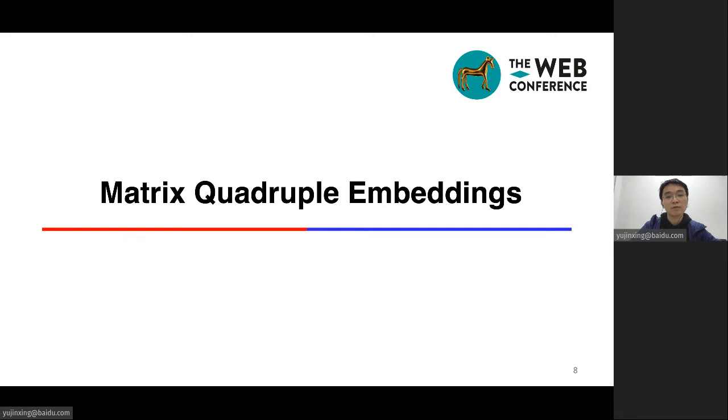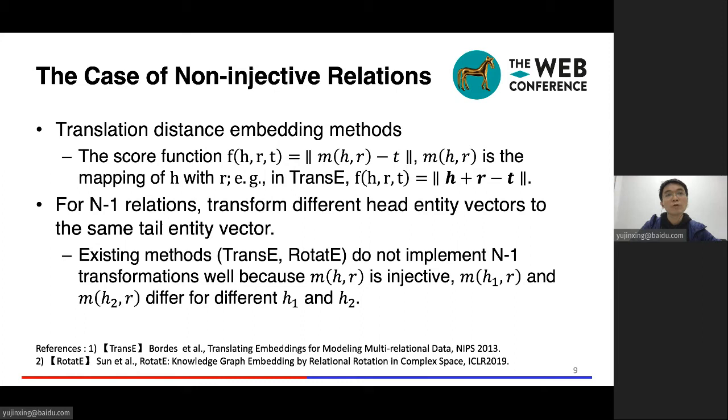We propose Matrix Quadruple Embeddings to tackle the challenges. We follow translation distance embedding methods and consider non-injective relations. We use M(H)R to represent the relation transformation of a head entity. The score function is the distance between M(H)R and T. For example, Trans-E embeds the entities and relations as vectors. The score function is H plus R minus T. For n-to-one relations, the model should transform different head entity vectors into a very small local region around the tail entity vector. However, in the existing methods like Trans-E, the mapping function M(H)R is injective. M(H1)R and M(H2)R differ for different head entities.